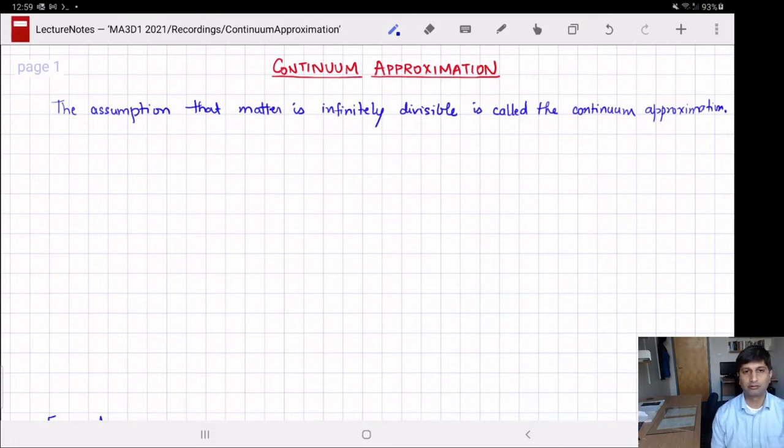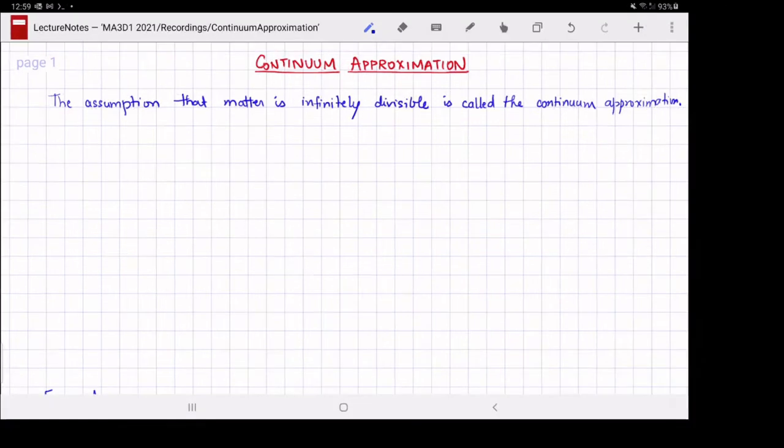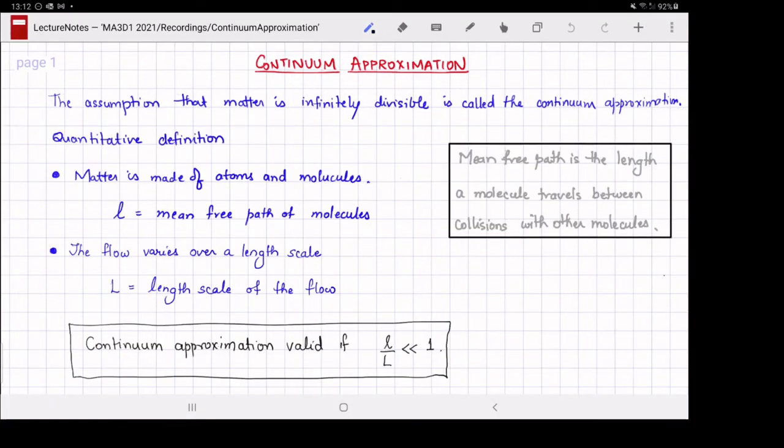We saw in the definition of a fluid that a continuum is a substance that is infinitely divisible, and we make that assumption for matter. But here we are going to go more into this definition and perhaps even define it quantitatively. Matter is made of atoms and molecules, and these molecules are in constant state of thermal motion. The mean free path of the molecules is the length these molecules travel in a straight line before they collide with other molecules and alter their path.